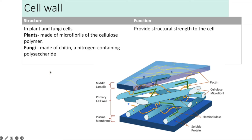Cell walls are found in plant cells and also in fungi — both of which are eukaryotic — and in prokaryotic organisms. Plants have a cell wall made of cellulose, whereas fungi have a cell wall made of chitin, a nitrogen-containing polysaccharide. The function of the cell wall is to provide structural strength.